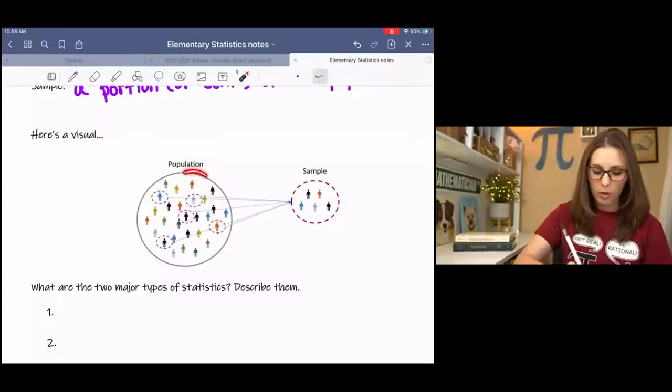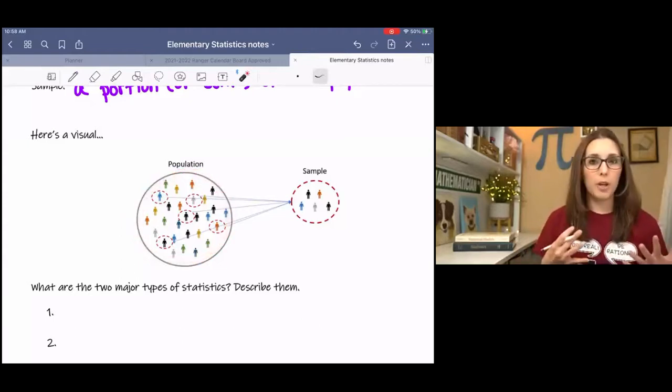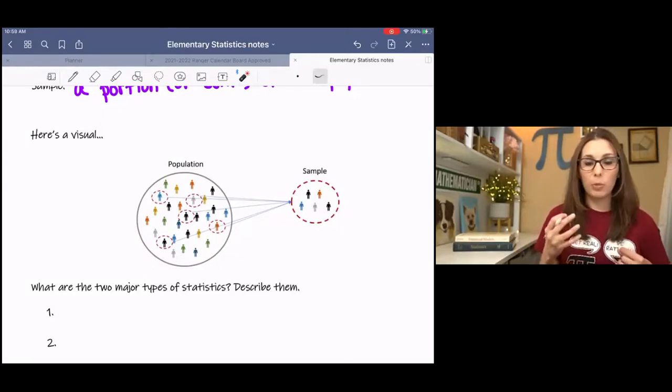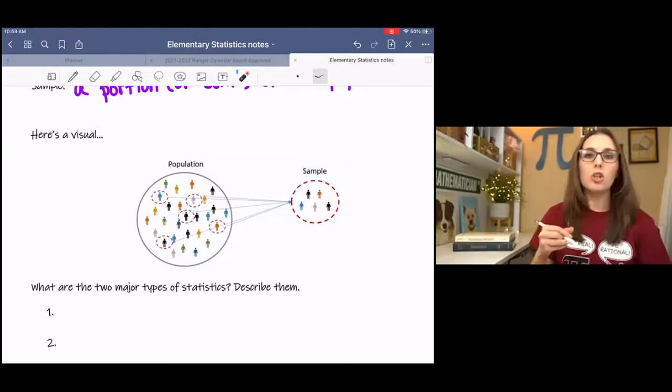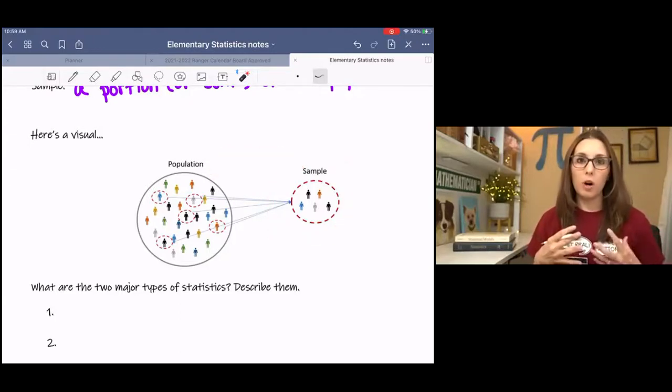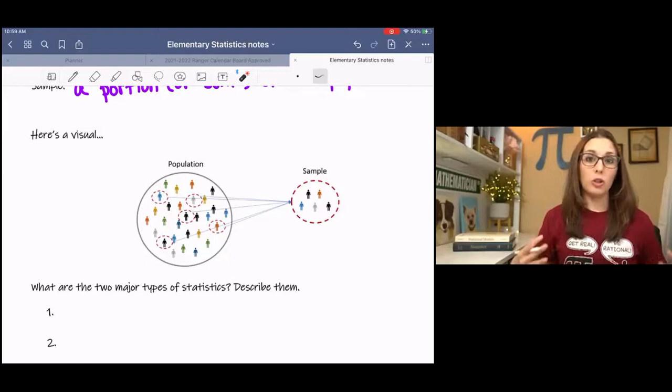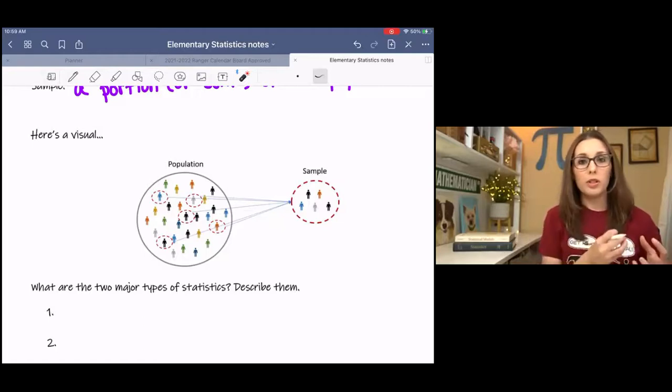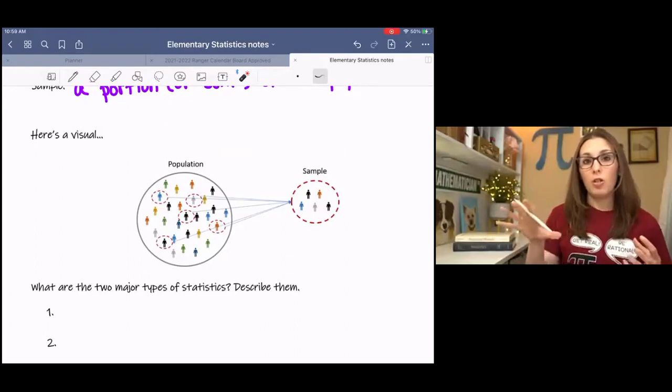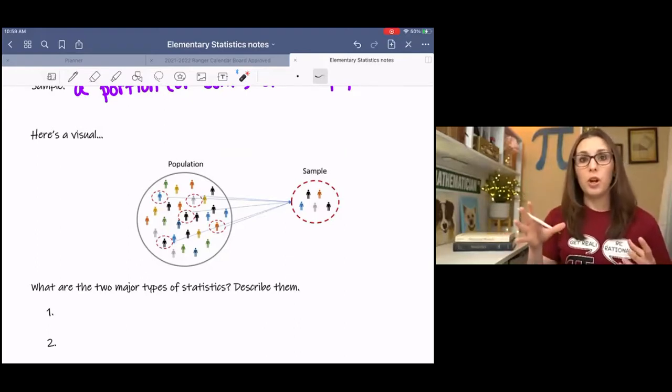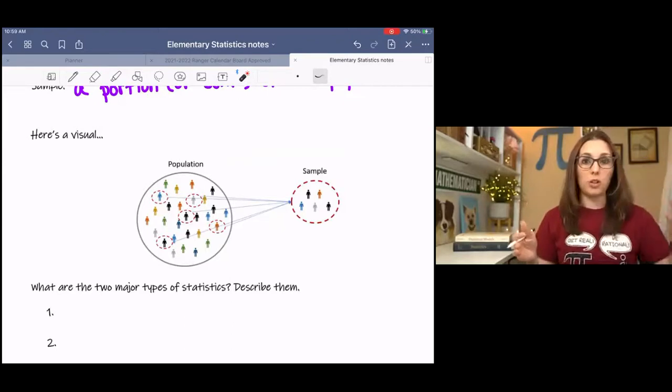We have a big group of people or subjects. It may not be people. It might be cats or something like that. And then we're pulling, hopefully, a representative sample from the population to help us get an idea of what our population actually looks like. So the population, if we're trying to gather data on the population, but it's too big, we can pull a section out of the population and study those subjects instead. And hopefully those few subjects that we pulled properly represent the population that we're studying.